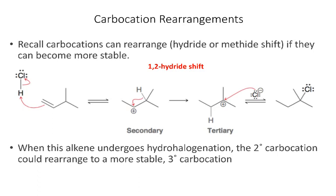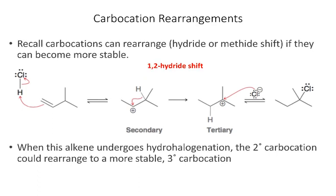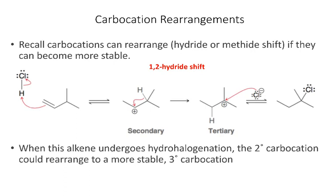If we think about hydrohalogenation, when the pi bond attacks the hydrogen, that forms a carbocation. In this case, it forms a secondary carbocation.